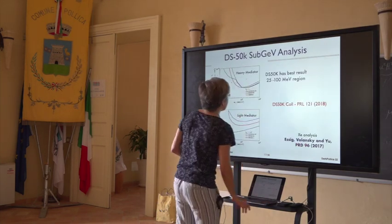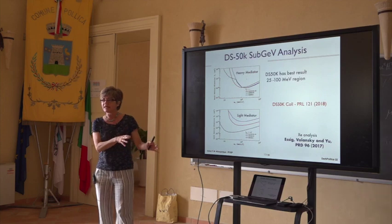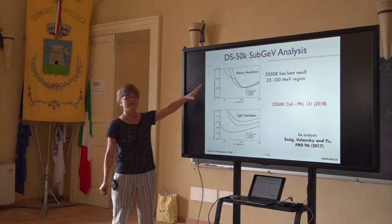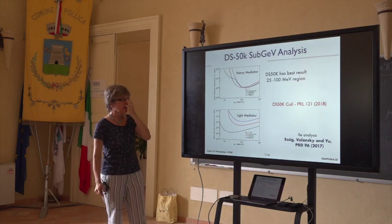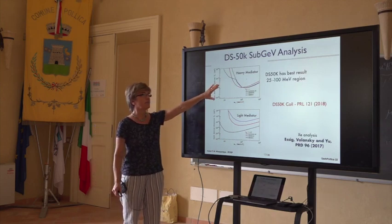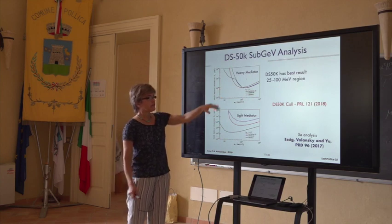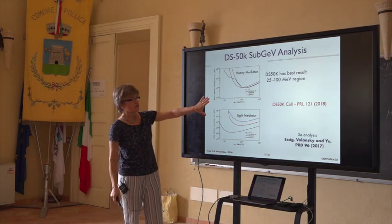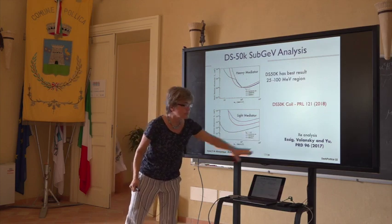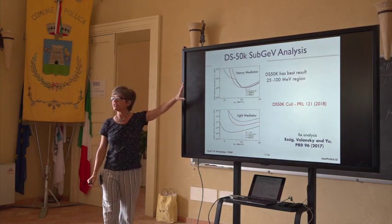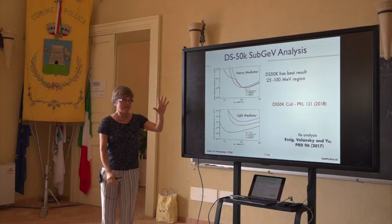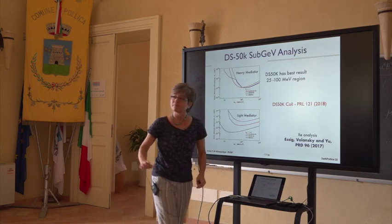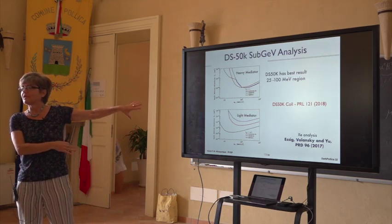We also did a sub-GeV analysis using the same method, comparing with different models assuming heavy and light mediators. For the 25 to 100 MeV mass region we also get the best results at that time of publication, stronger than both xenon results — results for xenon were from Reuven's work.